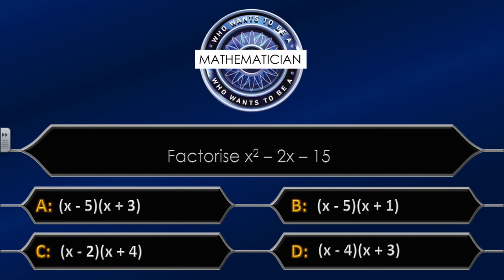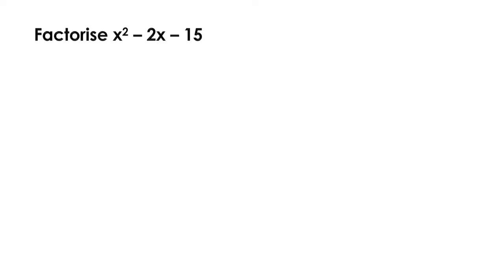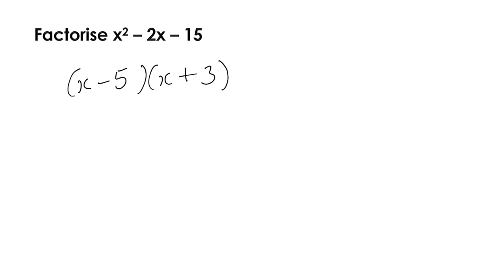The correct answer is A: (x minus 5)(x plus 3). To factorise x² minus 2x minus 15, we need two numbers that multiply together to give minus 15 but also add up to minus 2. The signs are minus and positive, giving us 5 and 3. Minus 5 times positive 3 gives minus 15, and minus 5 plus 3 gives minus 2. That's our final answer.